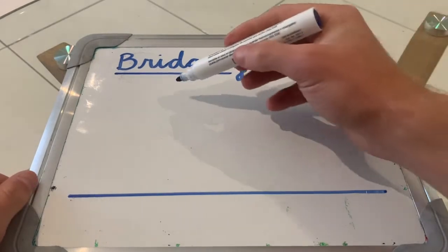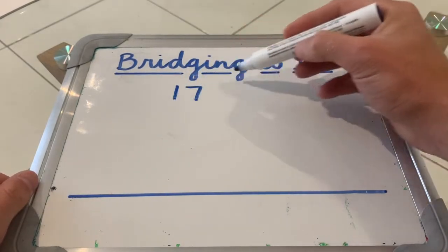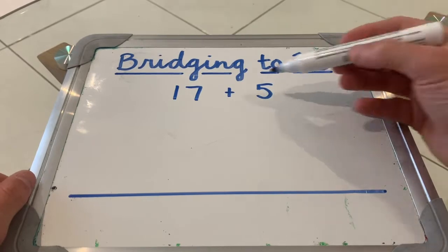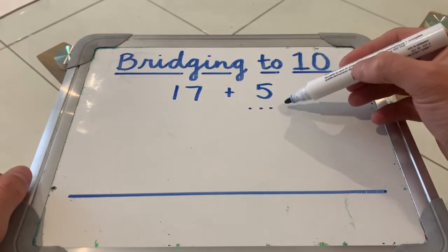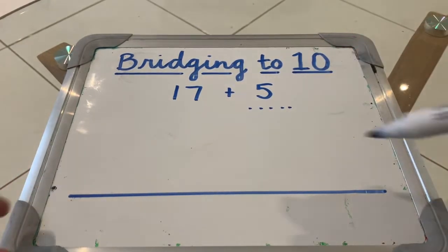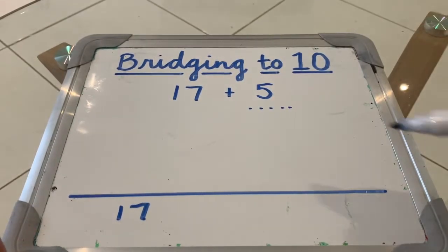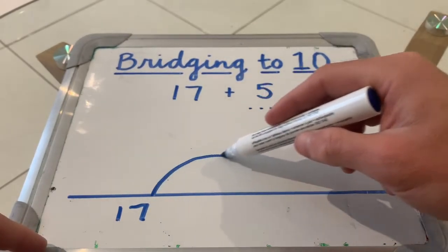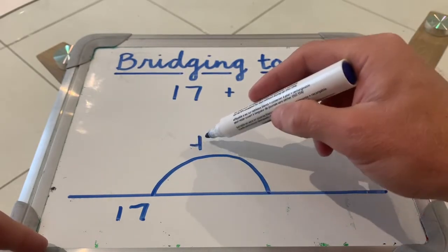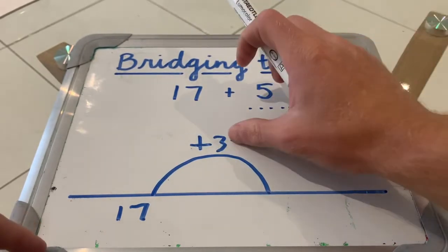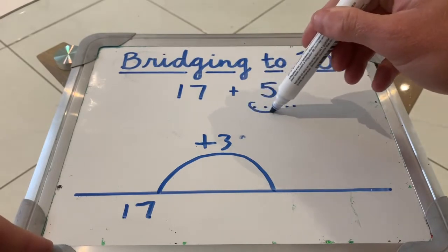Let's say I have 17 and I want to add 5. I need to think how many to the nearest 10. It is 3 more to 20. So by adding 3, I get to 20.